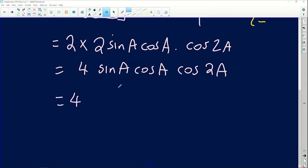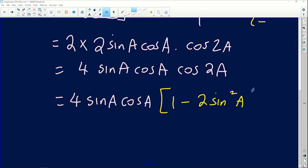So now let's see what will happen if we simplify this further. 4 is a number. I've got sin A, which I'm going to put here. We've got cos A. Now, the double angle of cos 2A, there are three versions. I'm going to choose the one that says 1 minus 2 sin squared A, which is the same as the double angle of cos 2A.